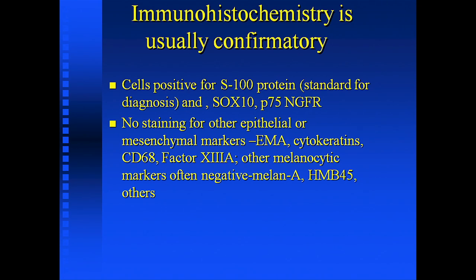Because what can happen is, if it's allowed to grow as what you think is a scar, you'll find three years later it's a massive, several-centimeter deeply invasive nodule. Fortunately, immunohistochemical stains usually establish the diagnosis. The one that is usually used is the S100 protein — very sensitive but not very specific. There are two others that can be used: SOX10 and the nerve growth factor P75. In rare cases that are S100 negative, you can use those antibodies.